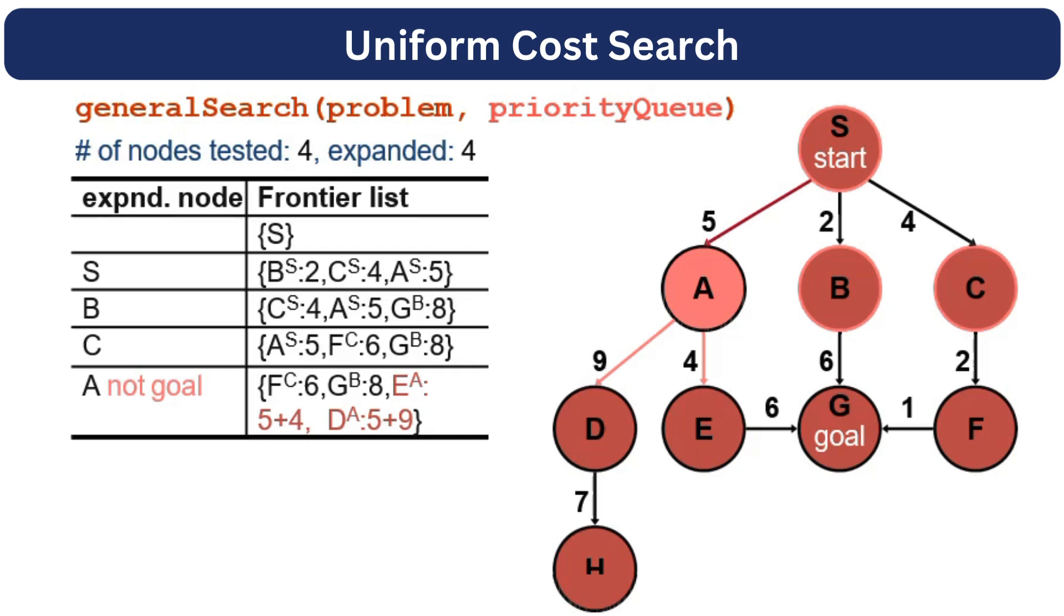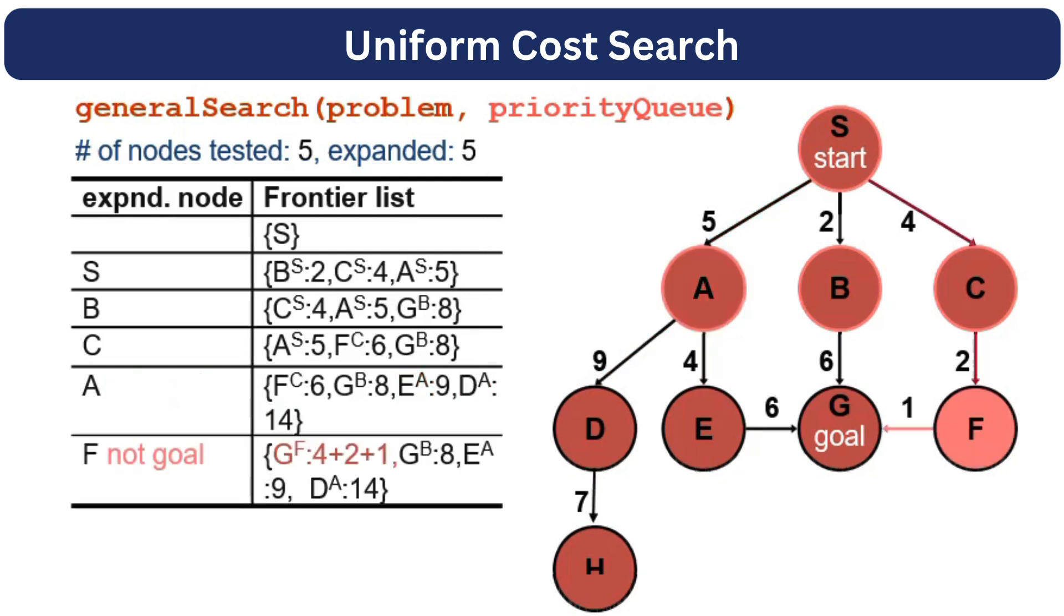They will be appended at the end of the priority queue. So the next node with the least cost is F. So we will dequeue F node, check if it is a goal node or not. And then visit its neighbor. The neighbor is G. Please note that we already have the G node in the priority queue. But if we found this node again with a lesser solution, then we will enqueue it.